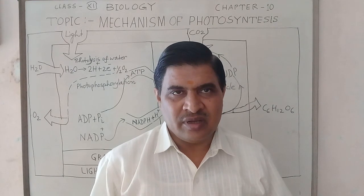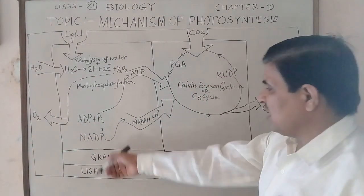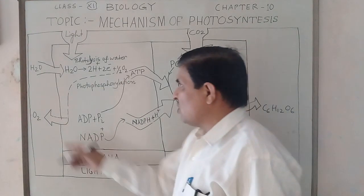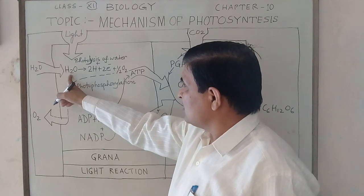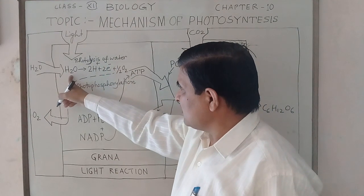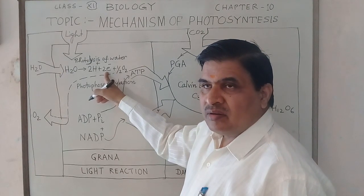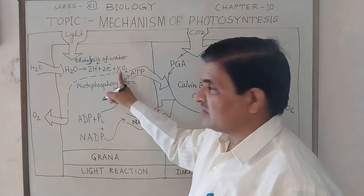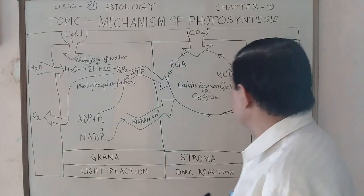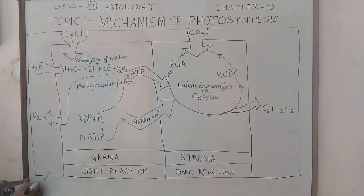The light reaction occurs in the grana part of the chloroplast, where water is utilized in the presence of photons or light — photolysis of water takes place. Water breaks into hydrogen ions, electrons, and oxygen gas is released. This oxygen gas comes out from the chloroplast into the cytoplasm part of the cell.